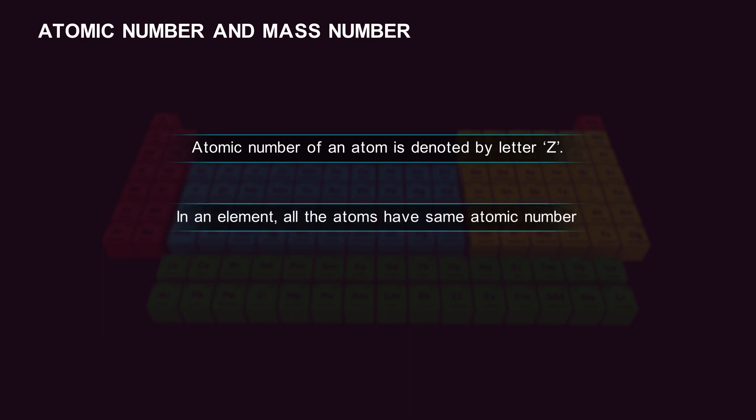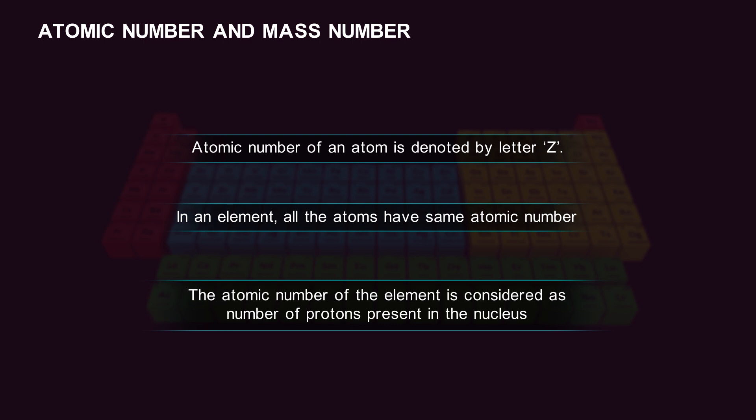In an element, all the atoms have the same atomic number. The atomic number of the element is the number of protons present in the nucleus.